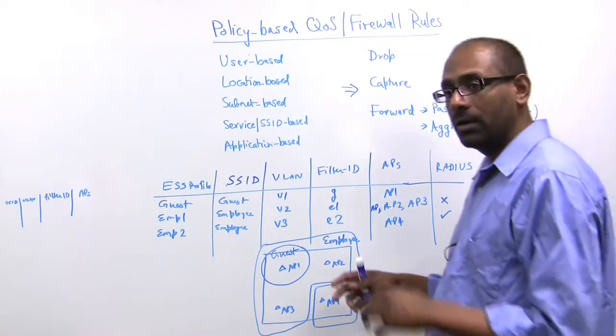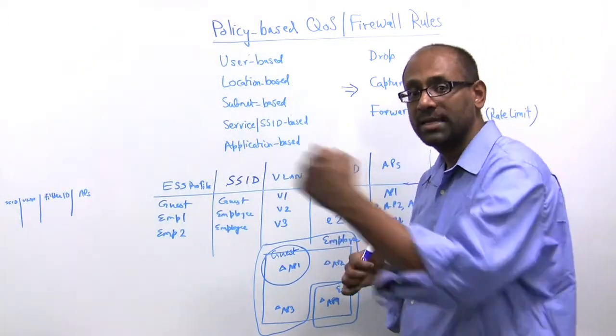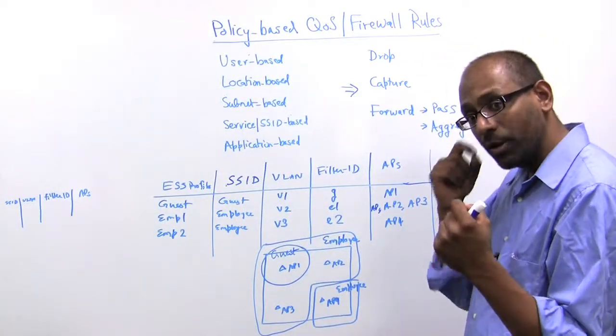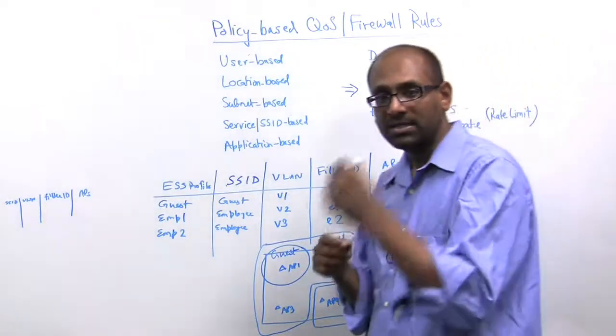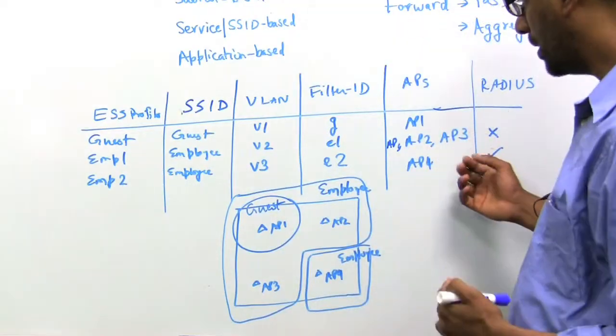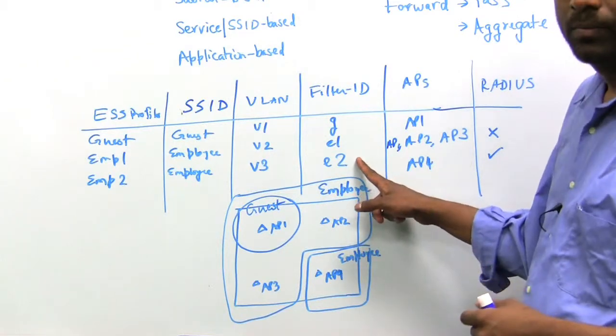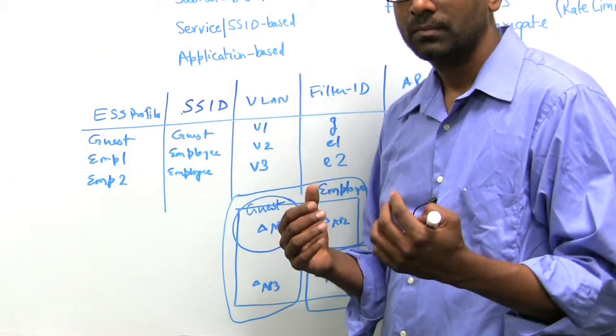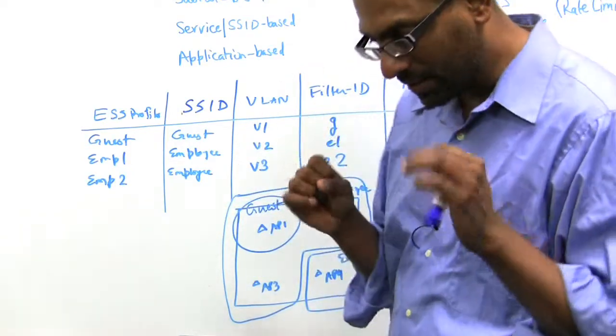At that point, the wireless LAN infrastructure goes and checks with the RADIUS server to see whether this particular user is going to be assigned a specific tag or not. If not, then it will default back to E2. Otherwise, a user can get a customized tag.